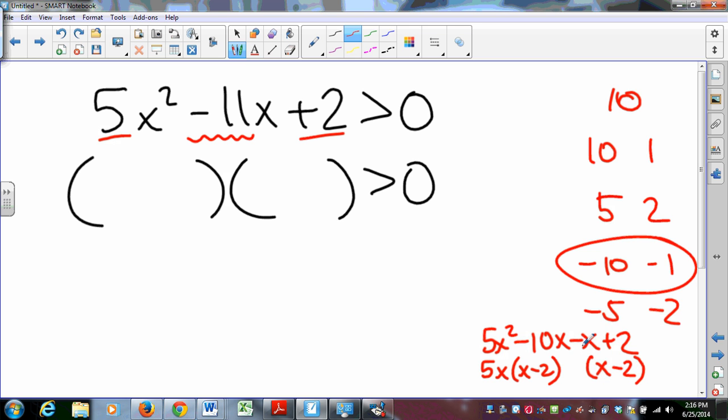And this has a common factor. And this has a common factor, but I really want an x - 2 there. So what do I have to pull out of here to get an x - 2? Oh yeah, it looks like that. And so I have two factors. I have x - 2, and I have 5x - 1. So now what?